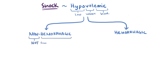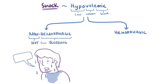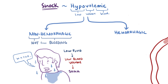Non-hemorrhagic means the loss of fluid volume isn't from bleeding — for example, if you were stranded in a desert and suffered severe dehydration. Eventually, your loss of fluid and sweat would reduce blood volume enough that it wouldn't supply your organs, and you'd develop hypovolemic shock. Hemorrhagic hypovolemic shock, on the other hand, is loss of blood volume through ruptured blood vessels — in other words, from bleeding.